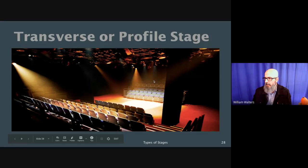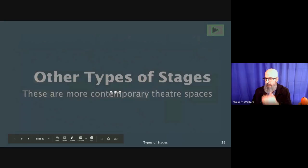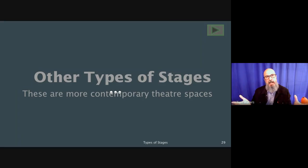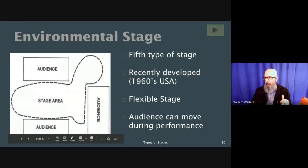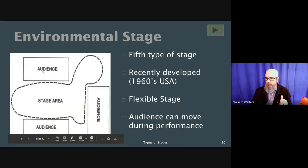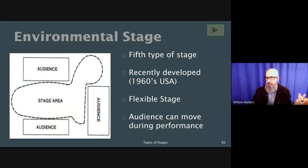Here's an example — audience sitting on two sides with the stage right in the middle. Those four types are the most common. What I'm about to show you now are some less common types of stages. The first is called an environmental stage. I don't need you to write anything down for this one. The audience can be placed anywhere — it's very flexible. A lot of environmental stages are created outside because you can position the audience anywhere in an open space.